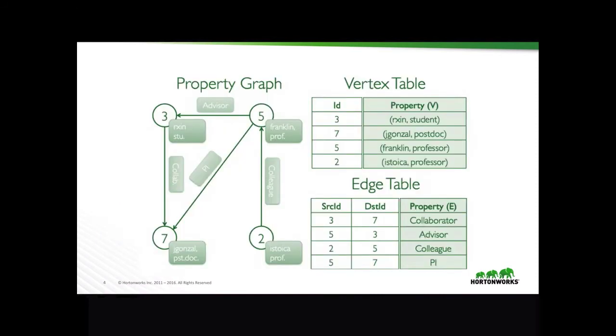To help you better understand graph terminology, let's look over a simple property graph example. We have two tables: a vertex table containing vertices and an edge table containing edges. Vertices contain information while edges describe the relationship between those vertices.